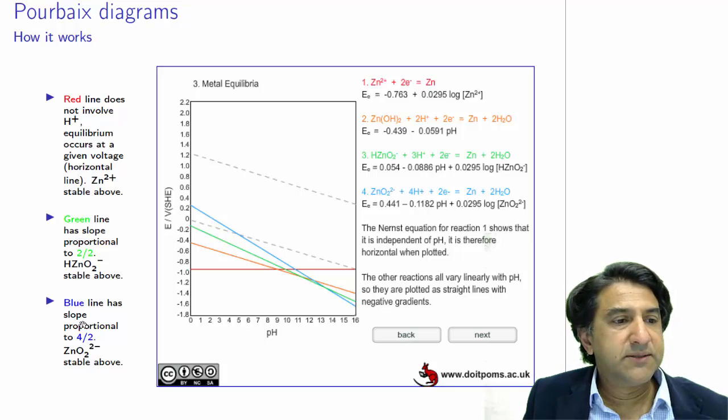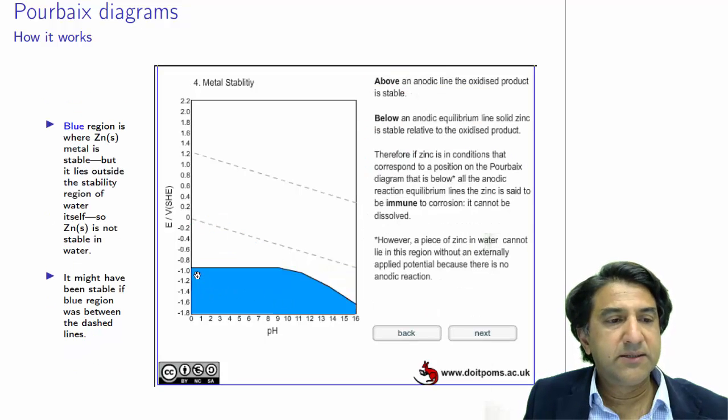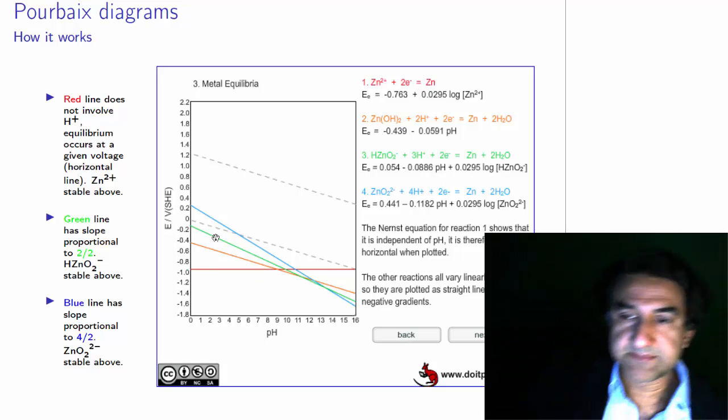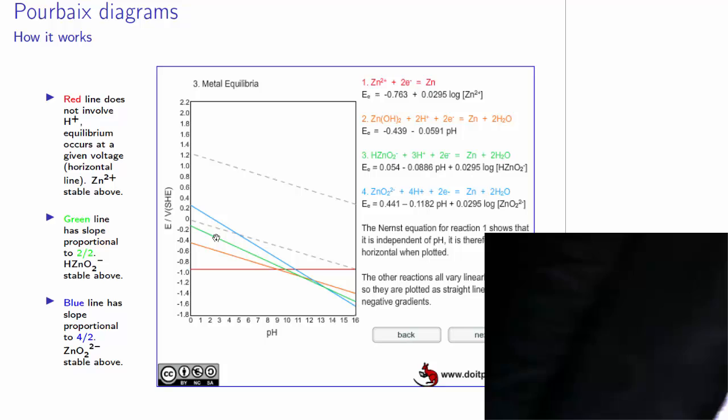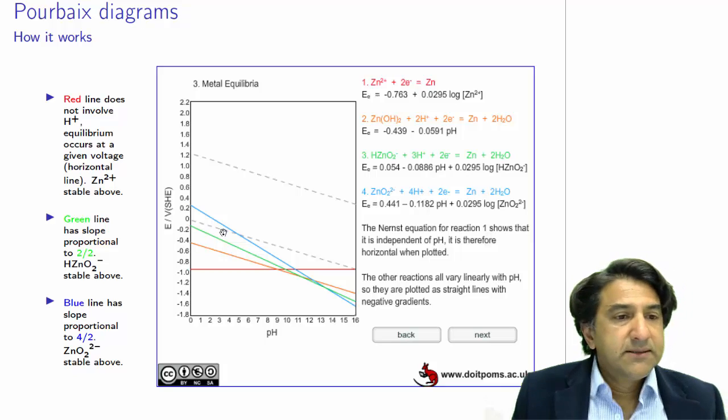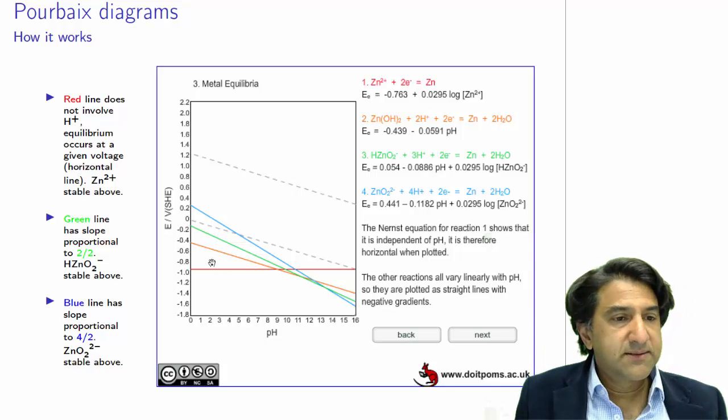Here I've noted the kinds of slopes that occur, but using this we can see that clearly below the very bottom most part of the graph is where zinc is stable. Let's look at that: below the red, zinc is stable, but also below the orange ZnOH2 is stable, and below the green and below the blue. So below all of those, zinc is stable. What happens above? Well, above the red, Zn2+ is stable.